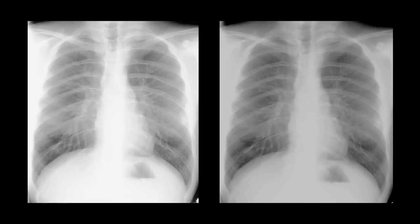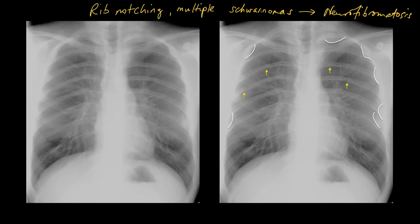This patient looks to have coarctation when you see the rib notching, but always beware — there are other causes of rib notching, one of which is neurofibromatosis. If you look very carefully at the edge of the film, you can see the schwannomas which are responsible for the rib notching. Note that you don't see them en face, only in profile. This patient has neurofibromatosis, not coarctation.